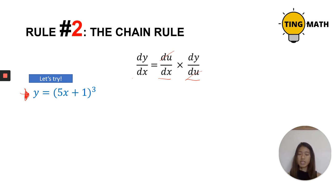Let's try this example here. When we use the chain rule, we use it when there is an x in the bracket. So here, there's an x in a bracket. We're going to let the inside of the bracket be u. So now we have u equals 5x plus 1.